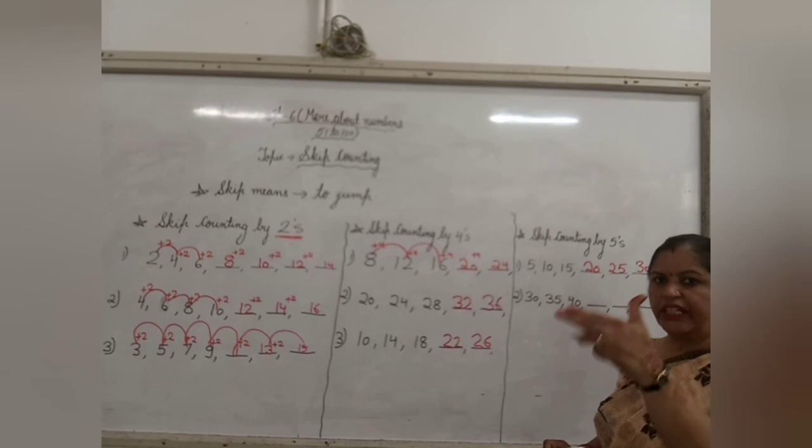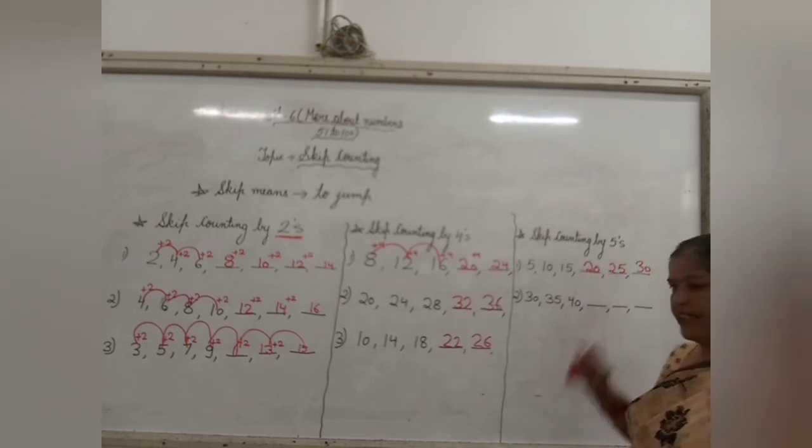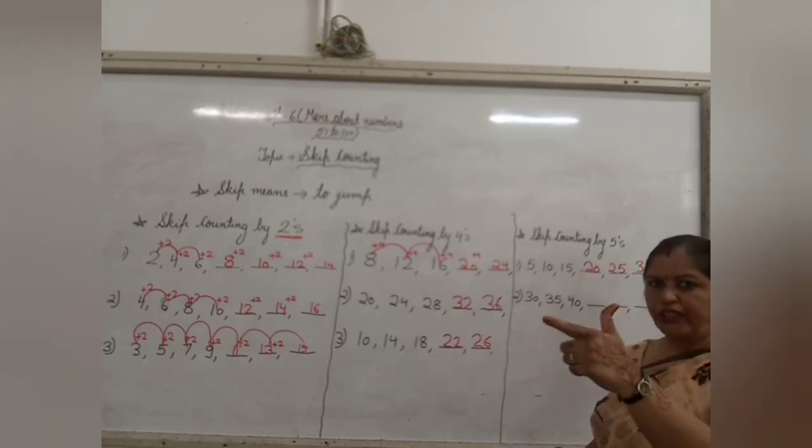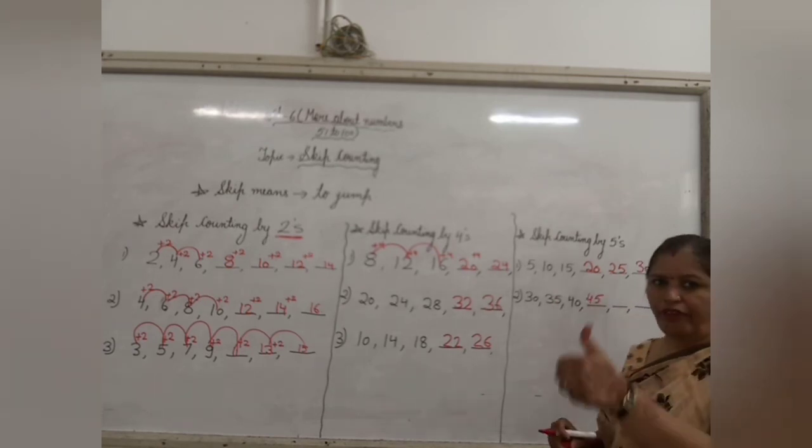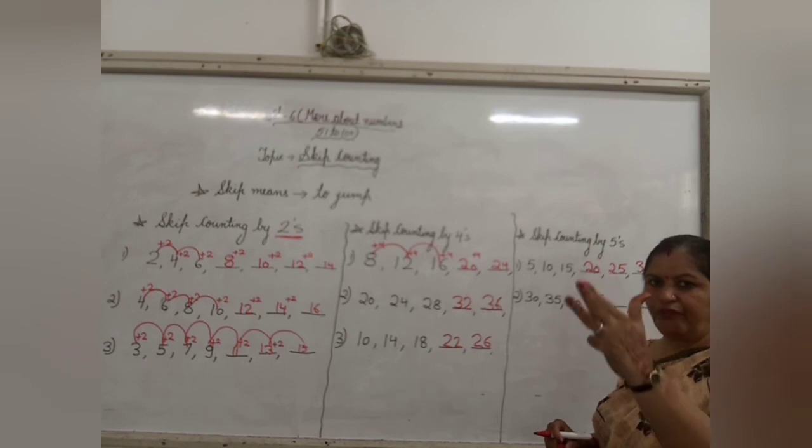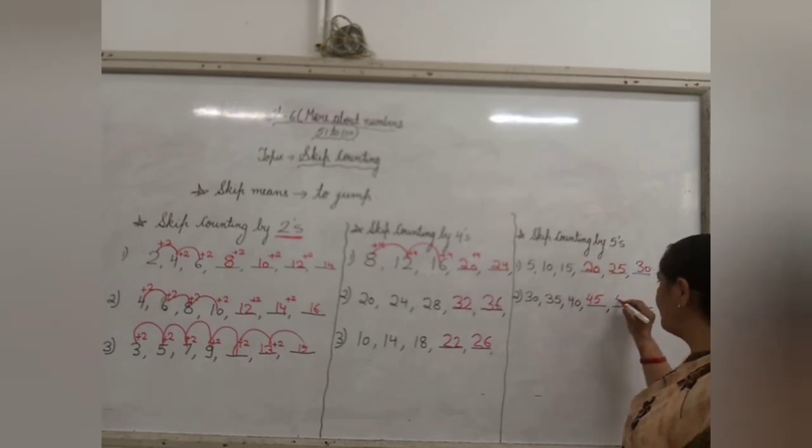36, 37, 38, 39, 40. 40 is written. 41, 42, 43, 44, 45. So come 45. Then 46, 47, 48, 49, 50. Then come 50.